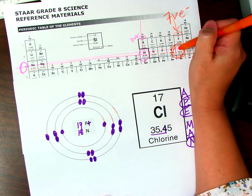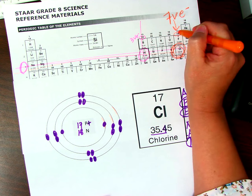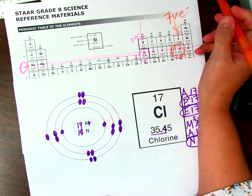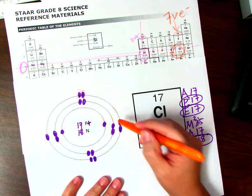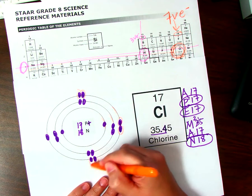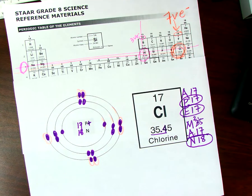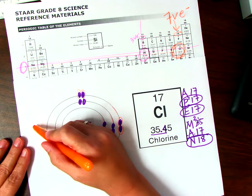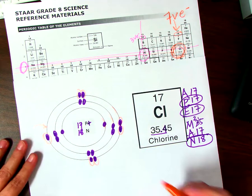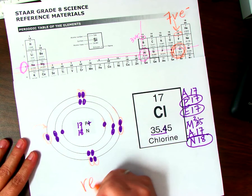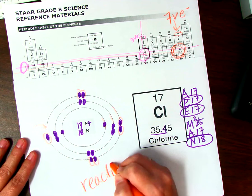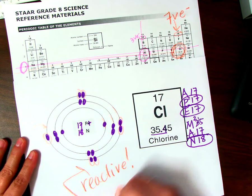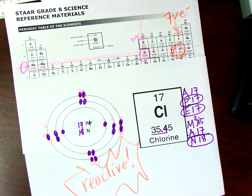So according to our chart here, it's in group 17, so we should have seven valence electrons. We have one, two, three, four, five, six, seven. Group 17, it wants one more. It wants one more. So this is very reactive. A very reactive group.